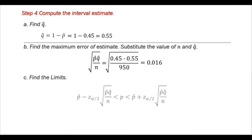Then find the limits. For the lower limit, we have p hat minus the error times z sub alpha over 2. For the upper limit, we have p hat plus z sub alpha over 2 times the maximum error. For the lower limit, we have 0.45 minus 1.96 times 0.016 less than p less than the upper limit 0.45 plus 1.96 times 0.016. So we have 0.419 less than p less than 0.481.